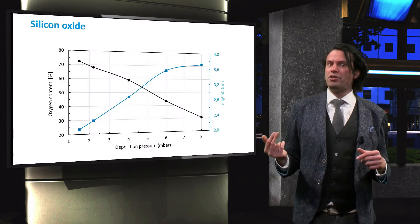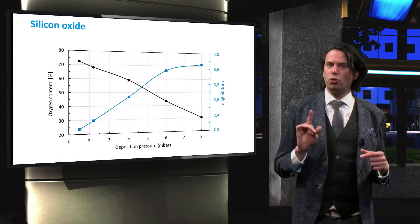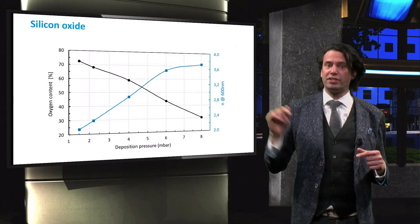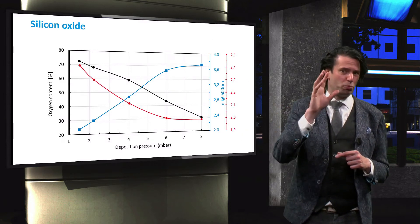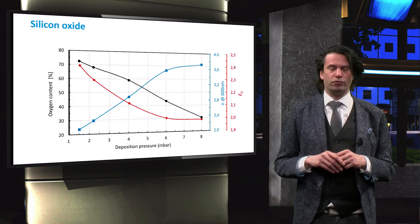The refractive index of the p-doped silicon oxide increases from 2.1 to over 3.7 and the band gap energy decreases with decreasing oxygen content from about 2.4 to just under 2 eV.